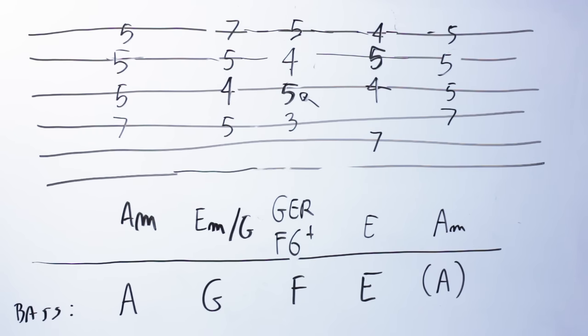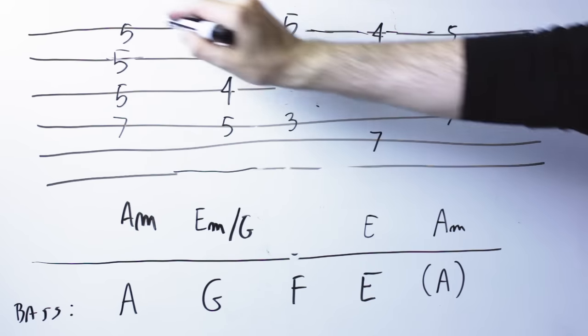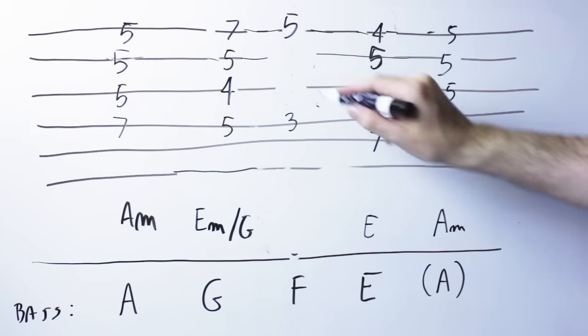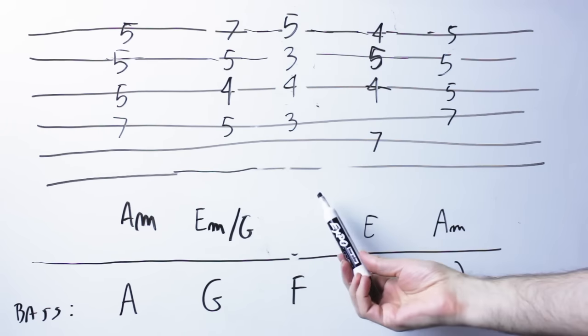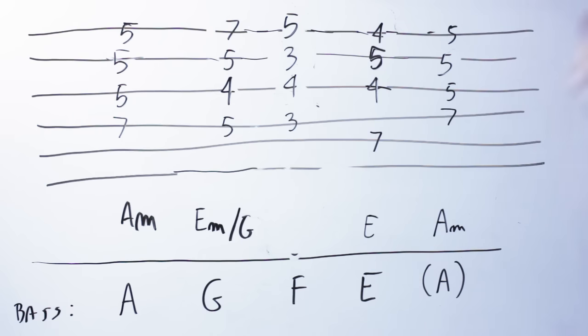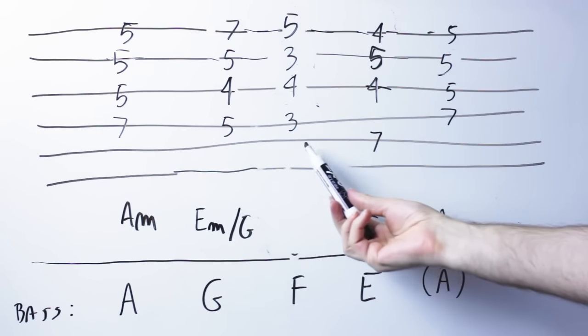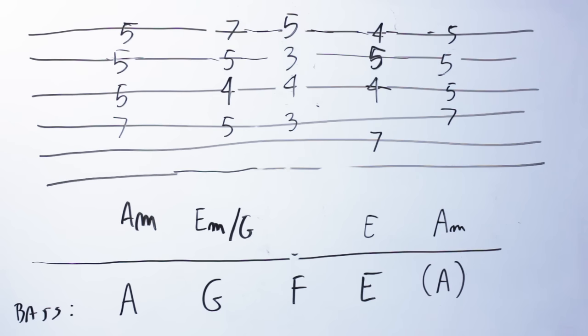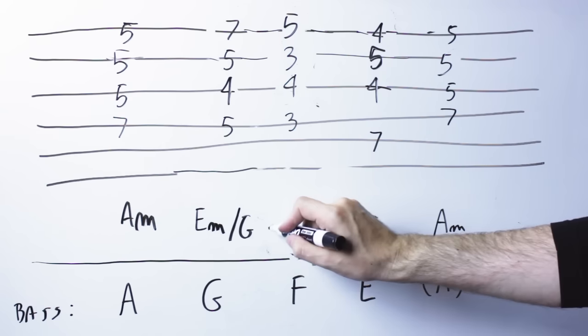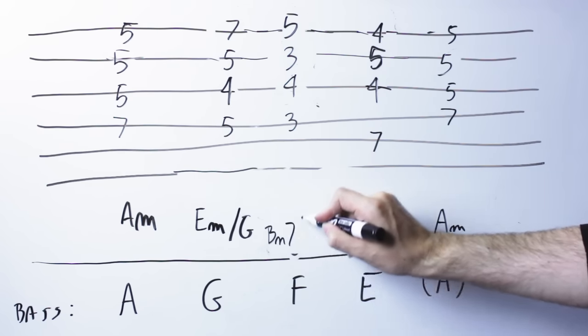So this is not the only possible version, though, because I can do something even different than that. So, again, as a starting progression, I could play this A minor, again, E minor over G, and I could play this strange thing here. Again, this sounds okay to our ears, there's still a parallel fifth inside, but what is this mystery chord here? Well, the notes are F, B, D, A.